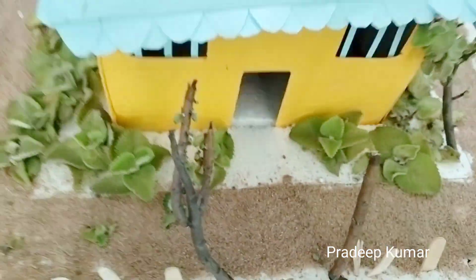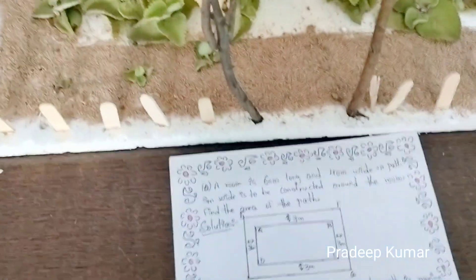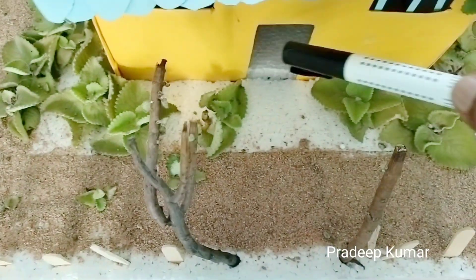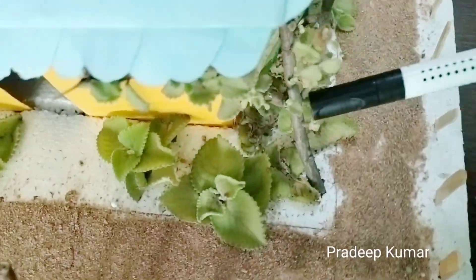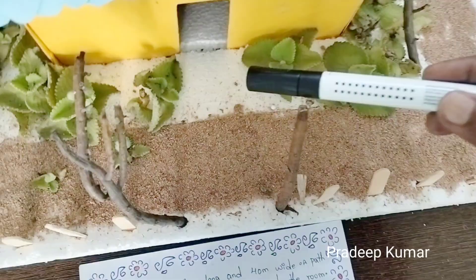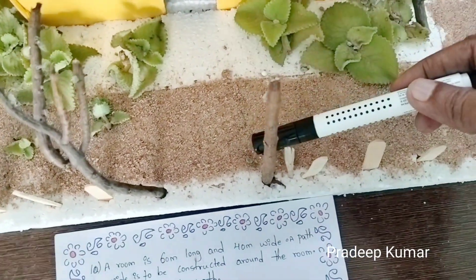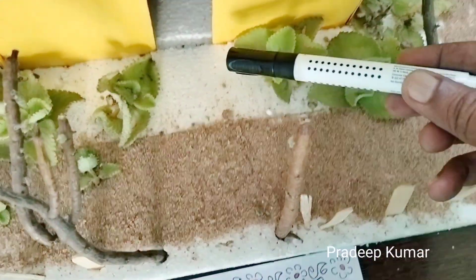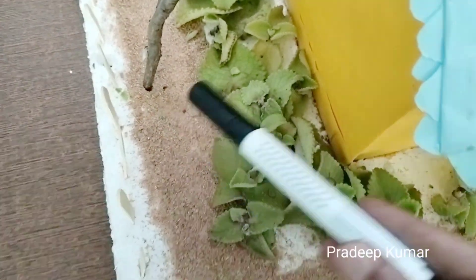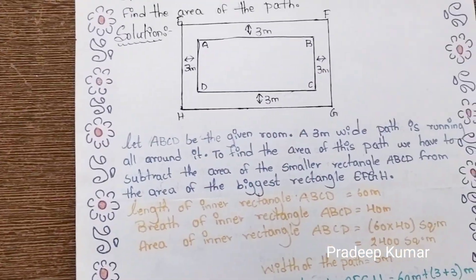This is the room and its dimensions are 60 meters in length and 40 meters wide. All around the room is a path of 3 meters. That means this side is 3 meters, the width of the path is 3 meters, and here also 3 meters — this is also 3 meters wide. I draw a diagram here.